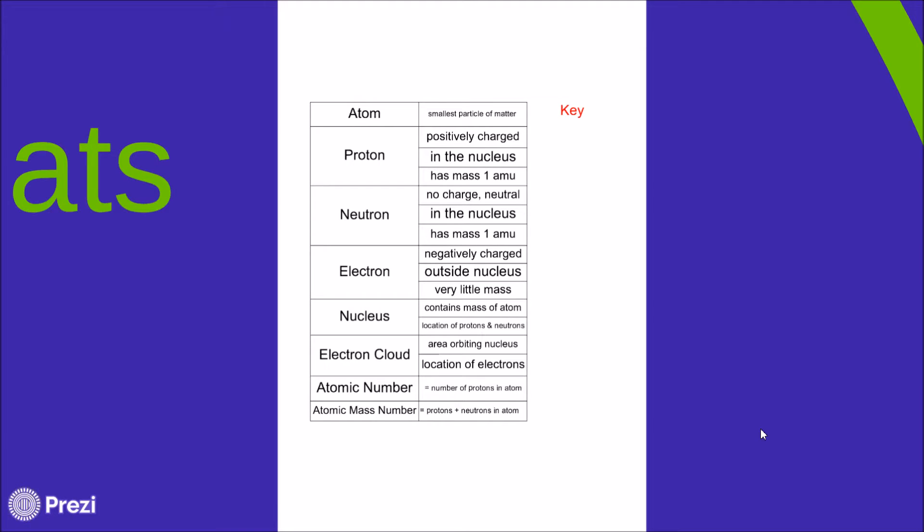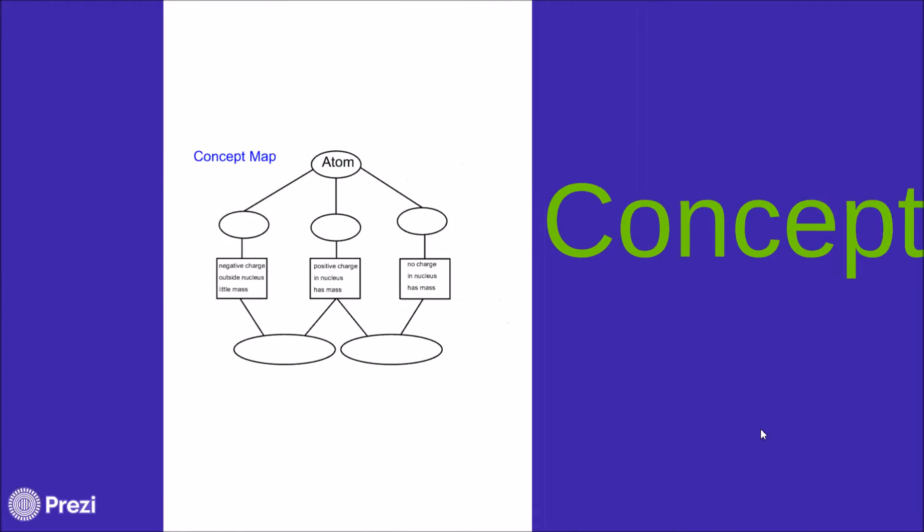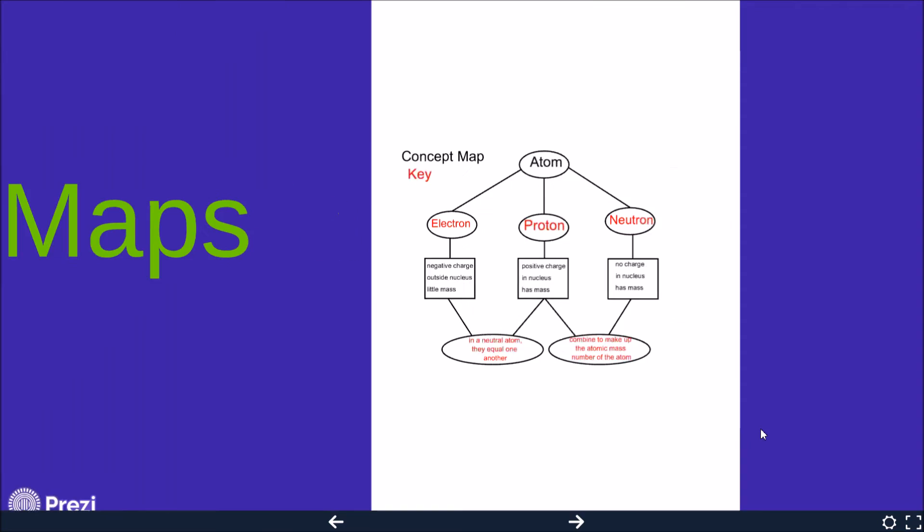Once the students have successfully matched the vocabulary with their definitions, therefore activating their prior knowledge, the students would take it to the next level, as STAR does, and use those vocabulary words to see how they are interrelated in a concept map. Again, this would be laminated and each student would receive one and work individually to match the terms and concepts onto the concept map. And again, a key will always be provided.